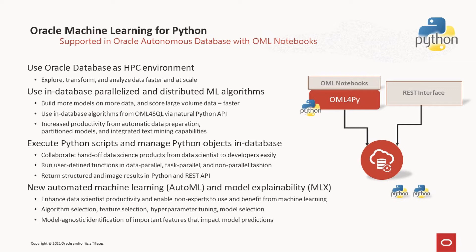So now let's focus on OML4Py. Oracle Machine Learning for Python leverages the database as a high-performance computing environment, manipulating database tables and views through Pandas DataFrame proxy objects with overloaded functionality that is translated to SQL transparently behind the scenes. This enables exploring, transforming, and analyzing data faster and at scale by keeping data in the database, while allowing the use of familiar Python syntax to manipulate database data. The in-database parallelized machine learning algorithms are exposed through a natural Python interface. With OML4Py, users can build more models on more data and score large-volume data faster, taking advantage of Autonomous Database optimizations, including Autoscale.